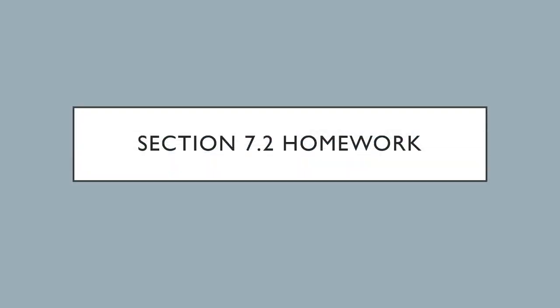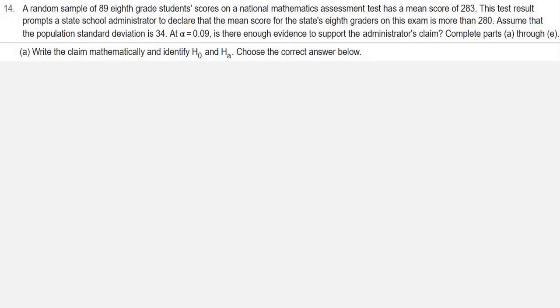We're looking at homework from section 7.2, question number 14. A random sample of 89 eighth grade students' scores on a National Mathematics Assessment Test has a mean score of 283. This test result prompts a state school administrator to declare that the mean score for the state's eighth graders on this exam is more than 280. Assume that the population standard deviation is 34. At alpha equals 0.09, is there enough evidence to support the administrator's claim? Complete parts A through E.